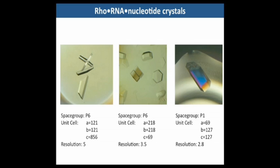In trying to crystallize a Rho-RNA nucleotide complex, we screened a large number of substrate combinations and obtained three different crystal forms. However, only one, diffracting to 2.8 angstroms, proved to contain the desired protein-substrate complex.